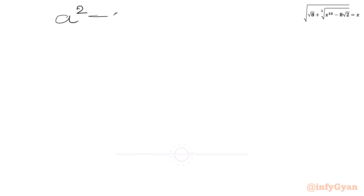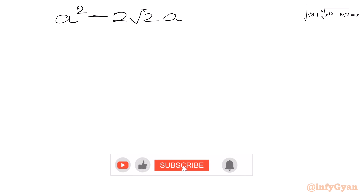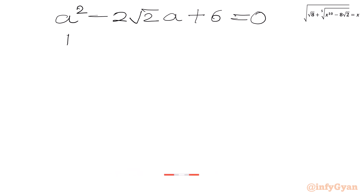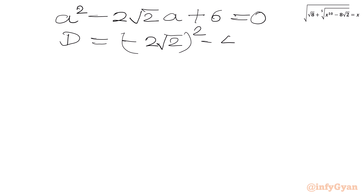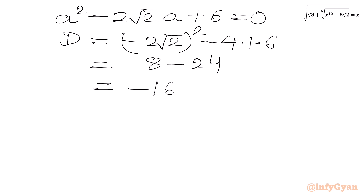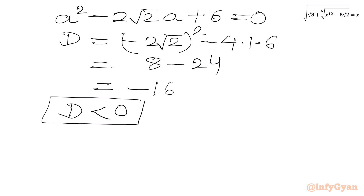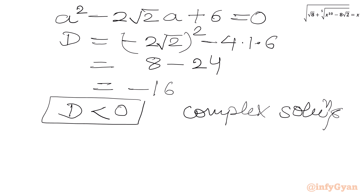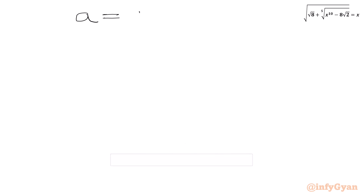Now for the first quadratic A² − 2√2·A + 6 = 0, we check the discriminant: Δ = (−2√2)² − 4(1)(6) = 8 − 24 = −16. Since the discriminant is negative, the solutions are complex and we reject this equation. The accepted value is A = √2.